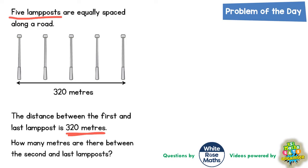What we've got to find is how many meters are there between the second and last lampposts. Between the first and last lamppost is 320 meters, but we need to find the distance between the second and last lamppost. In other words, there's the second one and there's the last one, so we need to find that distance.